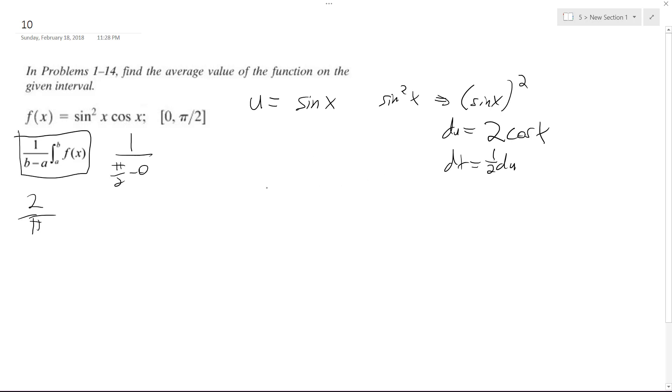All right, so now I can integrate. Integration is going to be u squared times one-half du. So u to the 2 plus 1 over 2 plus 1—and then times the one-half from the du—is going to get me u cubed, and then this is 3 over 6. So this becomes sine cubed x over 6.